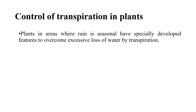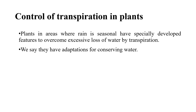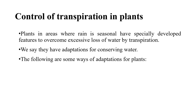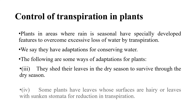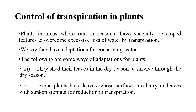Control of transpiration in plants: Plants in areas where rain is seasonal have specially developed features to overcome excessive loss of water by transpiration. We say they have adaptations for conserving water. Some plants shed their leaves in the dry season to survive. Some plants have leaves whose surfaces are hairy or leaves with sunken stomata for reduction in transpiration.